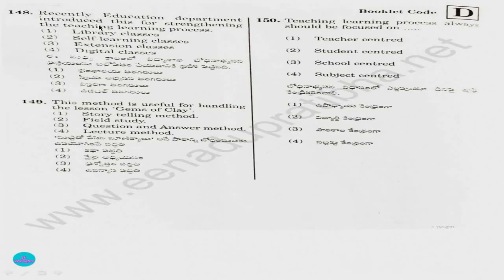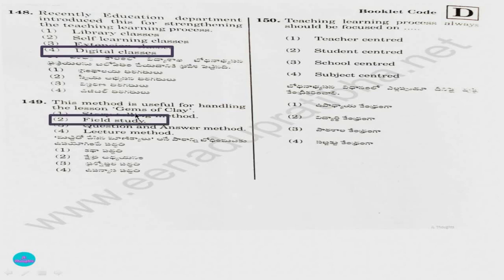Question 148. Recently, the education department introduced this for strengthening the teaching-learning process: 1) library class, 2) self-learning classes, 3) extension classes, 4) digital classes. Answer is option 4, digital classes. Question 149. This method is useful for handling the lesson on gems of clay: 1) storytelling method, 2) field study, 3) question and answer method, 4) lecture method. Obviously we have to go and see how clay is made and what things are made with clay. So it's field study.